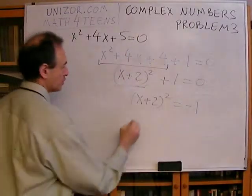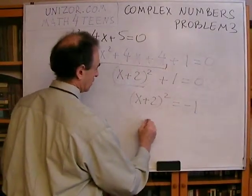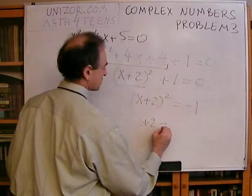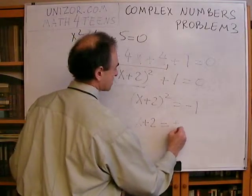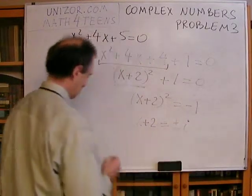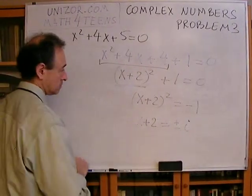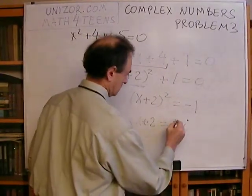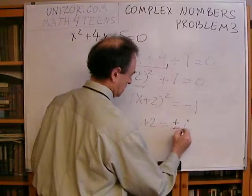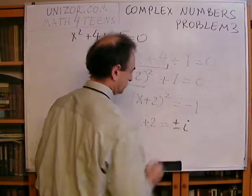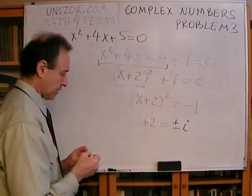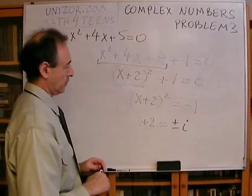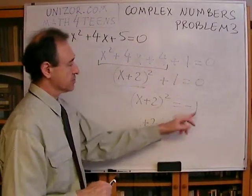Because I can immediately write from here that x plus 2 square is equal to minus 1, from which we derive immediately that x plus 2 is equal to plus or minus i, where i is a complex number which square is equal to minus 1.